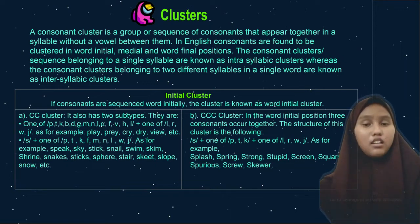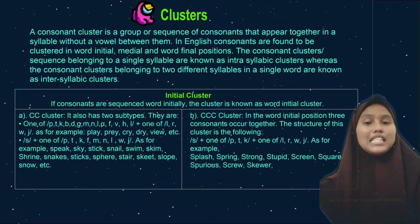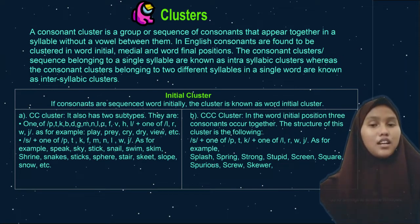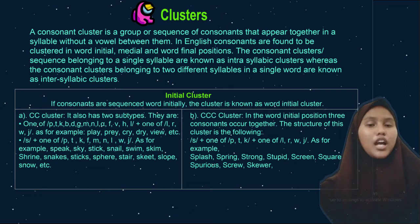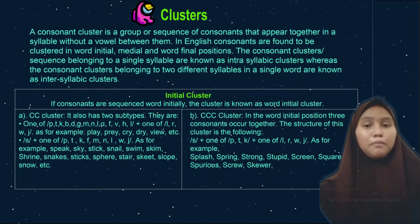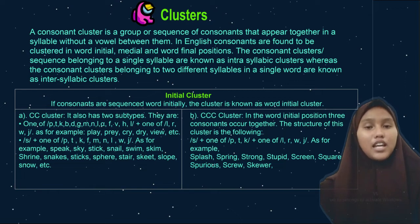CC clusters have two sub-types. The first is one consonant (from B, K, E, G, M, N, L, A, F, Z, H) plus one of E, B, or J. Examples include: play, try, view, and many more. The second is S plus one of P, D, K, F, M, N, L, W, or J. Examples include: sneak, sky, snake, smile, and many more.